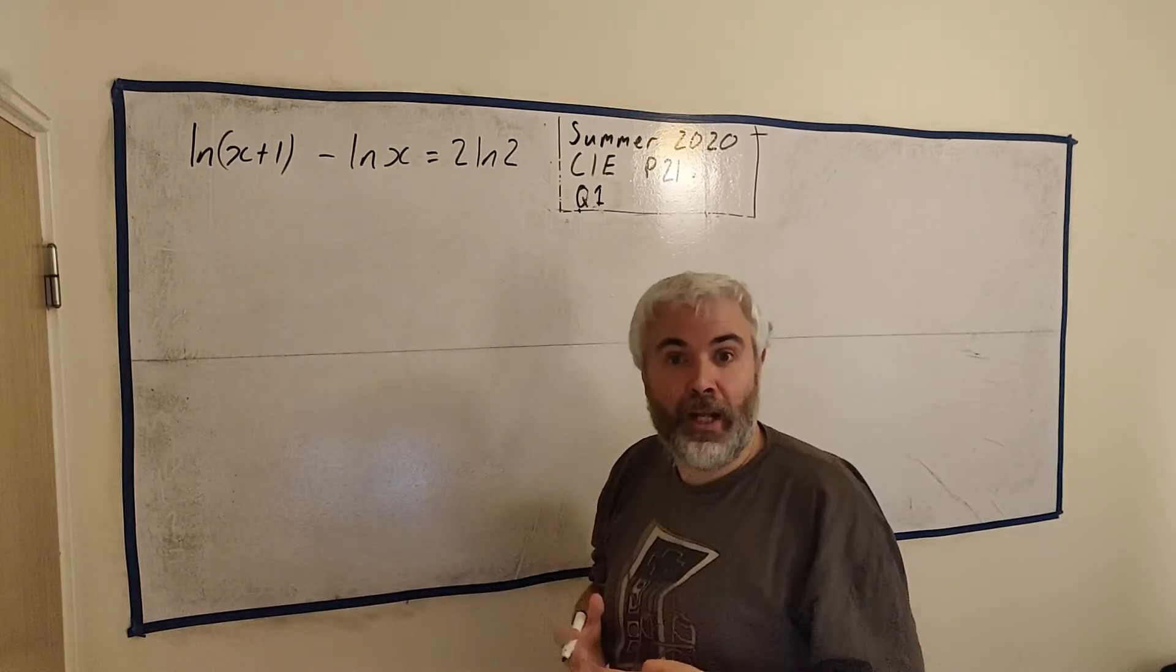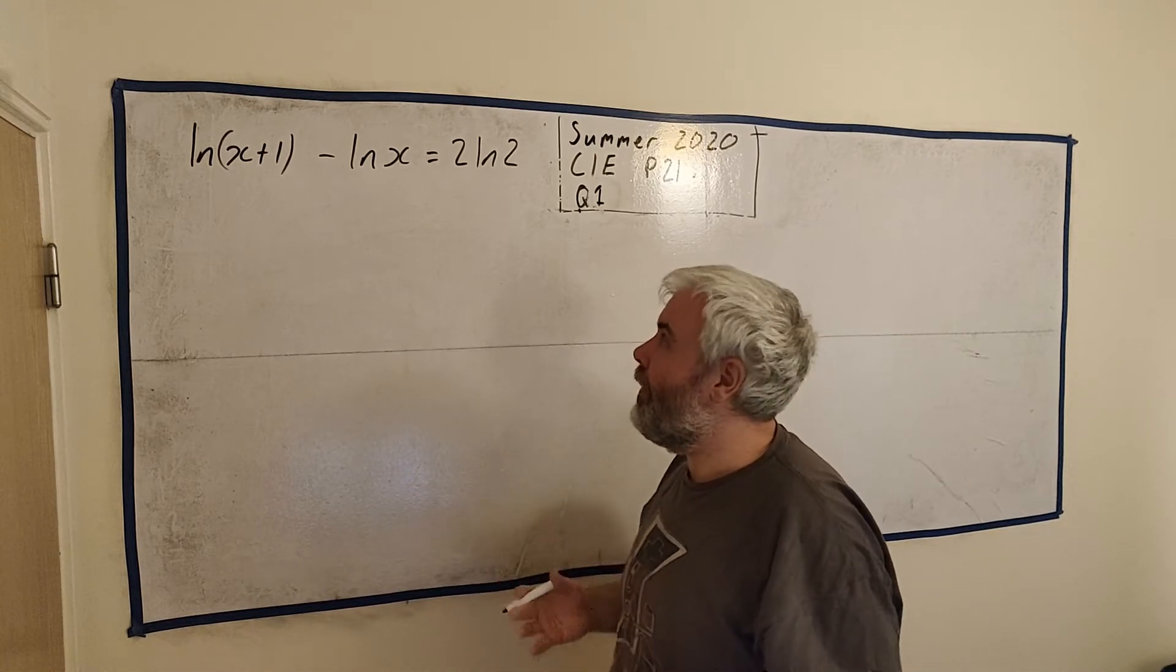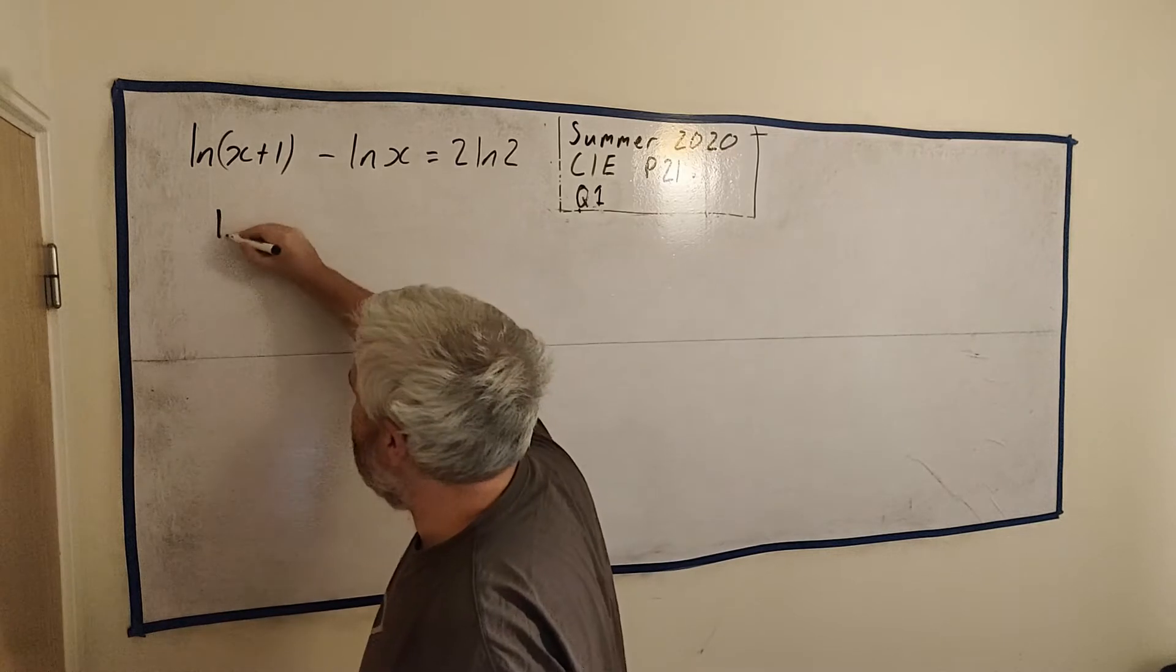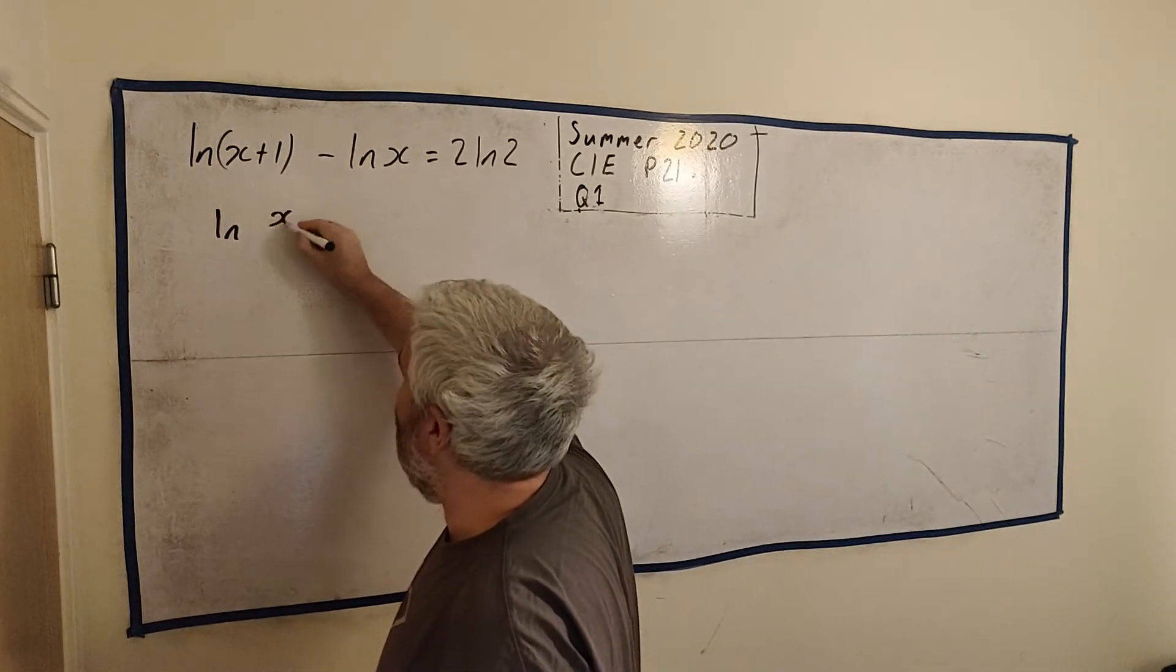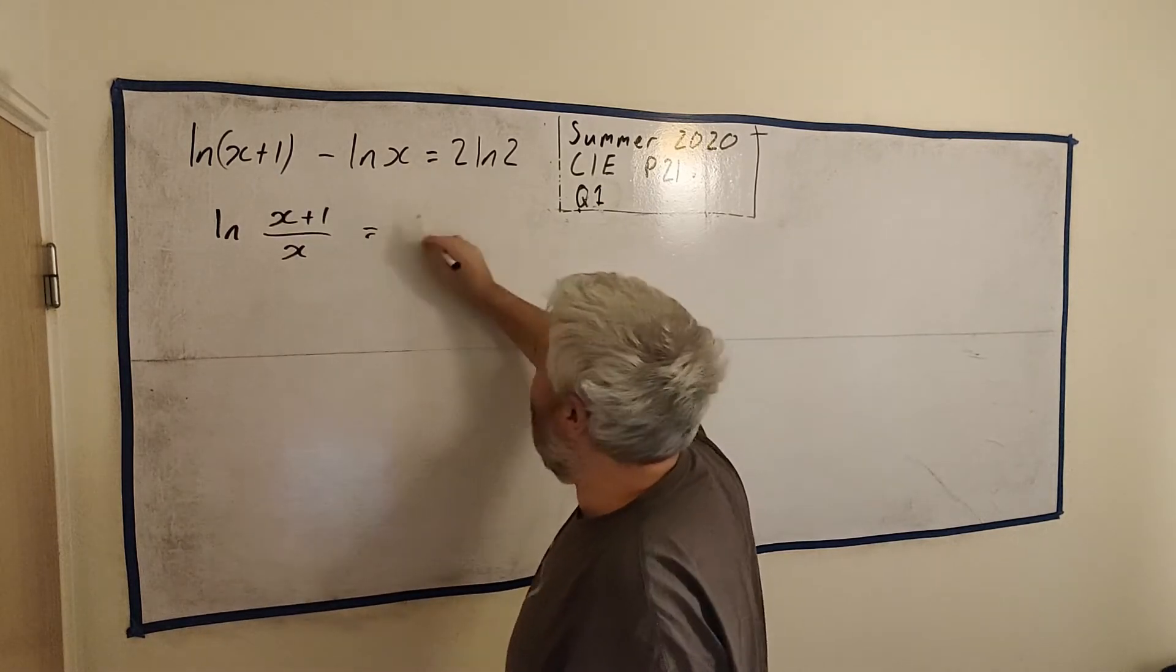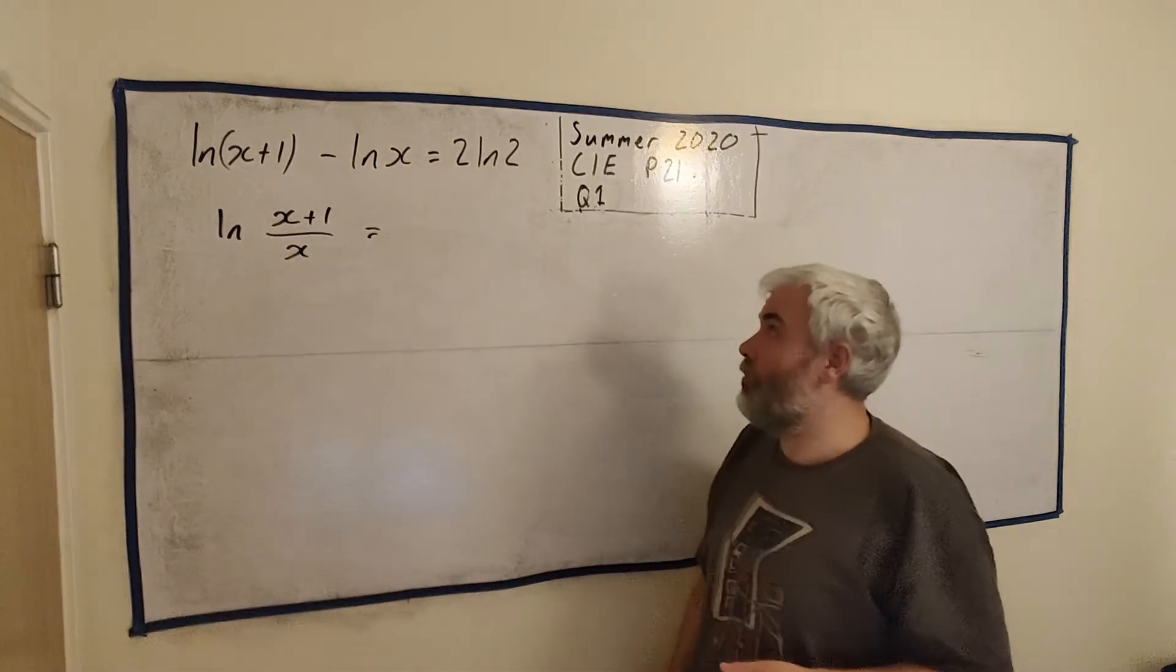When they add together they multiply, and when they take away they divide. So this becomes natural log of (x+1) divided by x. That's what these two become, and that still equals 2 natural log 2.